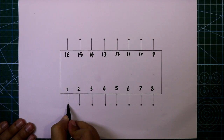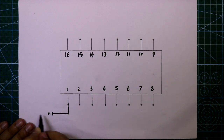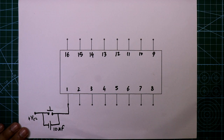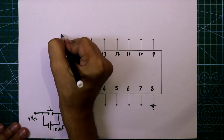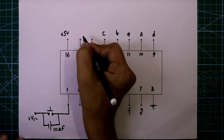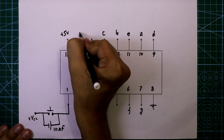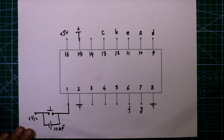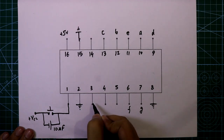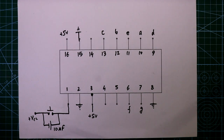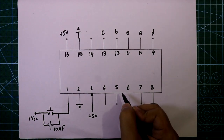Pin number one is the clock input pin, so to provide clock pulses we will use a push-to-on switch; the other side of the switch is connected to plus VCC. Pin number eight is ground and pin number 16 is plus VCC — connect plus 5 volt. To count from 0 to 9, pin number 15 should be connected to ground, pin number 2 should be connected to ground to enable the clock input pin, and as pin number 3 is an active low pin, to activate the display we connect pin 3 to plus 5 volt. Pin number 5 is used to cascade the ICs.